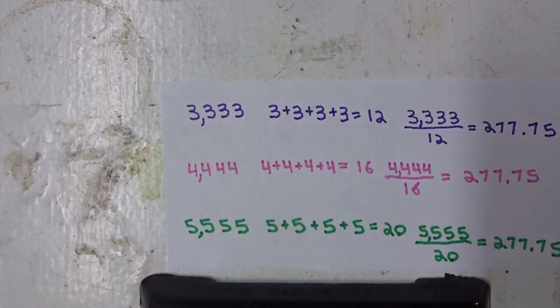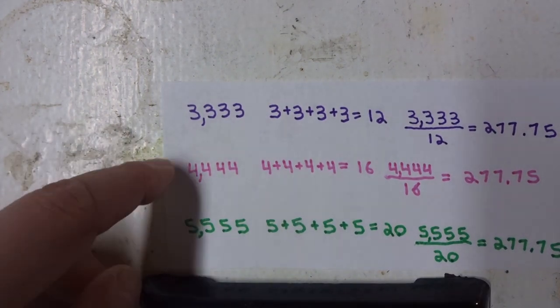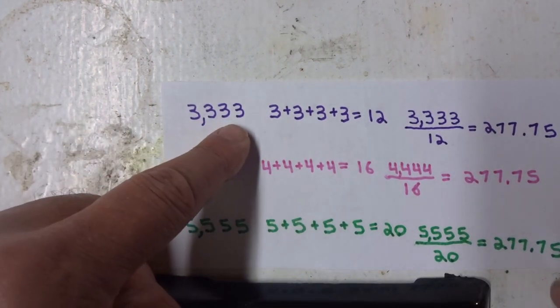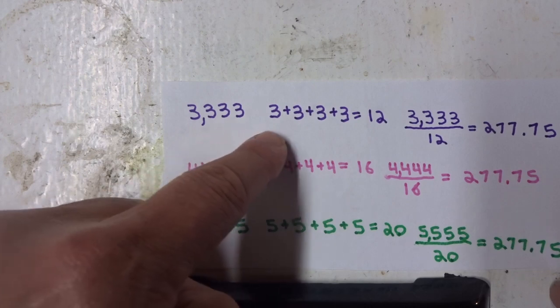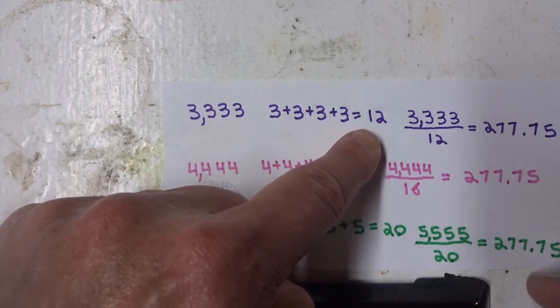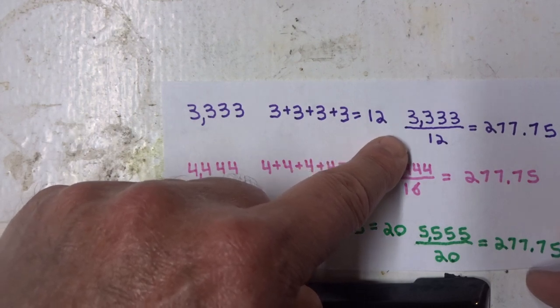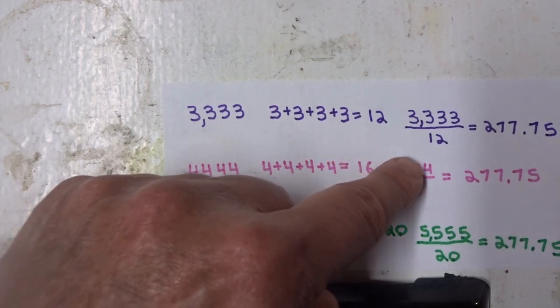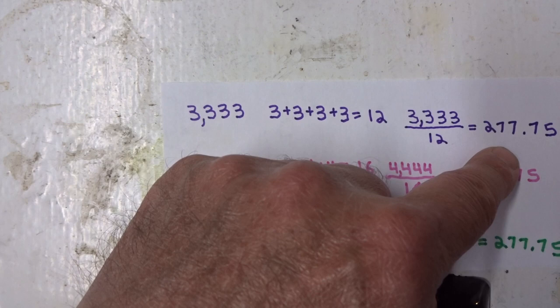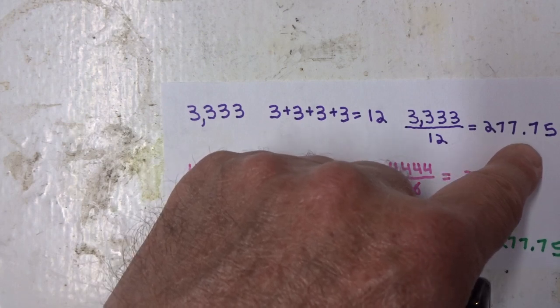Now we can take a four-digit number. 3,333, add the threes together, and we get 12. 3,333 divided by 12 equals 277.75.